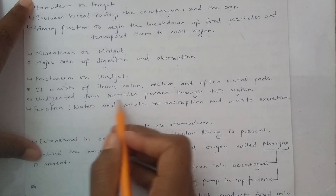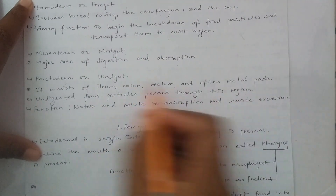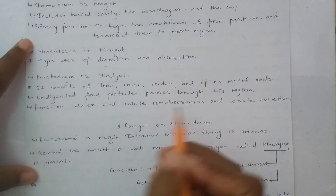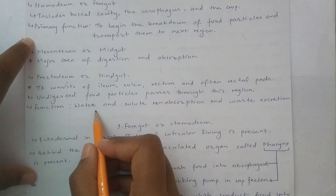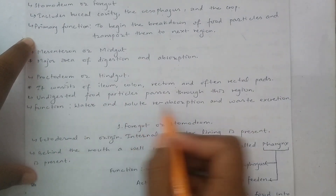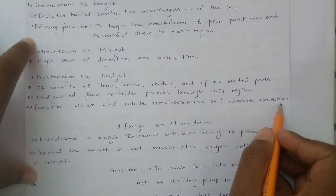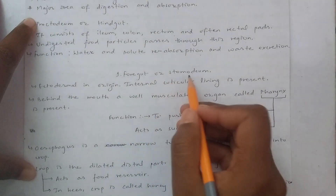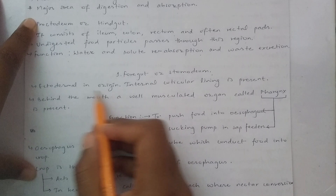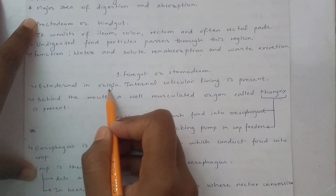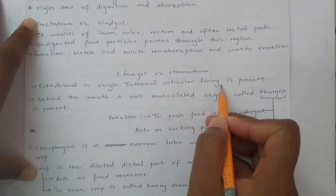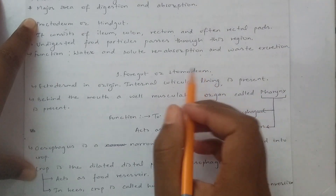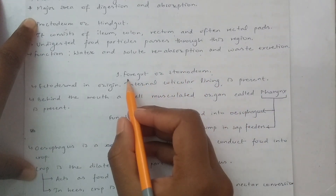Undigested food particles pass through the hindgut region. In the hindgut, the function involves reabsorption of water, salts, and waste. The foregut is of ectodermal origin and is present with an internal cuticular lining. In the hindgut case, there is no absorption.